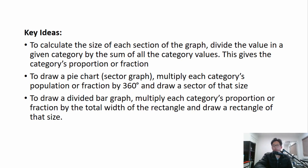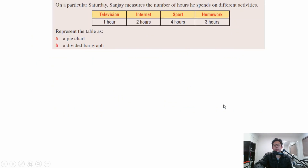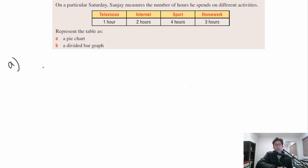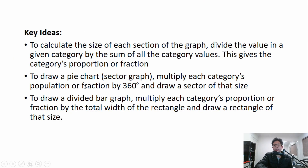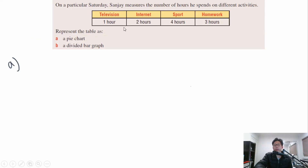Let's have a go at the first example. On a particular Sunday, Sanjay measures the number of hours he spends on different activities. Represent the table as (a) a pie chart and (b) a divided bar graph. Let's start with the pie chart. The key idea is to multiply each category's proportion or fraction by 360 degrees and draw a sector of that size.